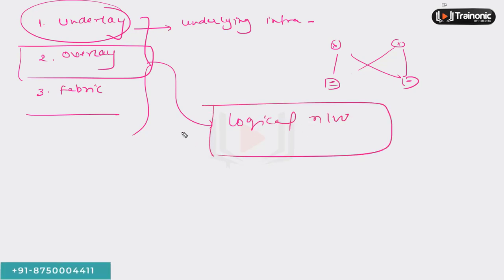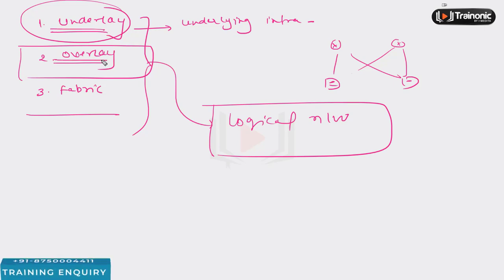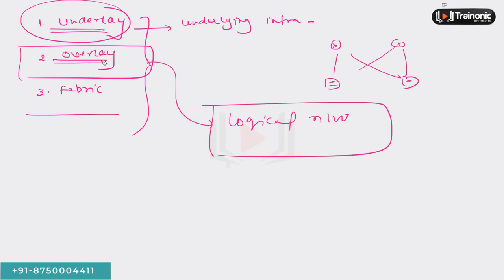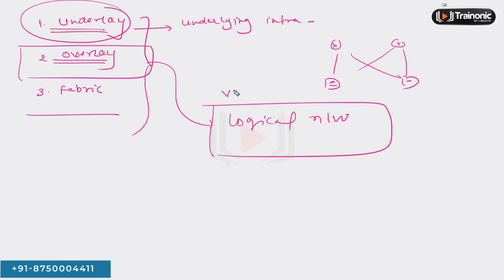On top of the underlay network, a logical network is built, and that logical network is what we call the overlay. In this overlay network, you might see a variety of tunnels being built, and we call those tunnels VXLAN tunnels.